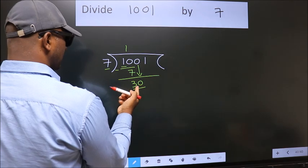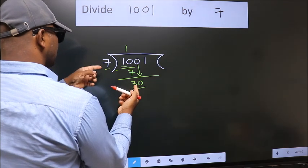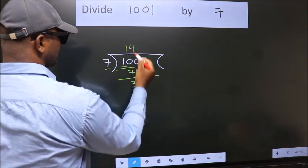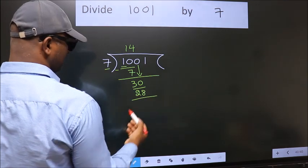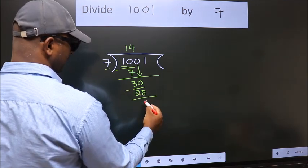A number close to 30 in the 7 table is 7 fours, 28. Now we subtract. We get 2.